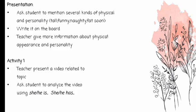The teacher can give some examples if needed, such as tall, pretty, smart, naughty, funny, and so on. After that, the teacher writes student suggestions on the board and gives more information about physical appearance and personality, explaining that there are two kinds of descriptors for describing people: those referring to appearance and those referring to personality.